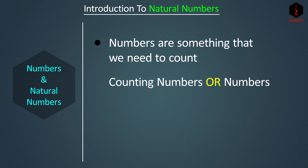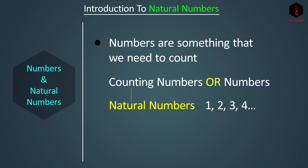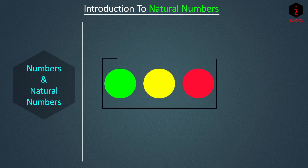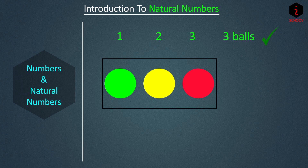These counting numbers are also called natural numbers. One, two, three, four, and so on are natural numbers — they just come naturally to us. Zero is not a natural number because counting does not start from zero; it starts from one. For example, when counting balls in a box we say one, two, three — we don't start from zero.